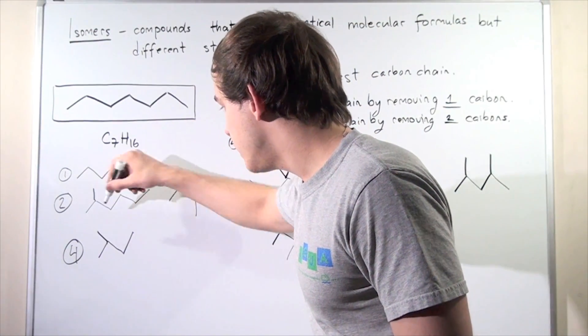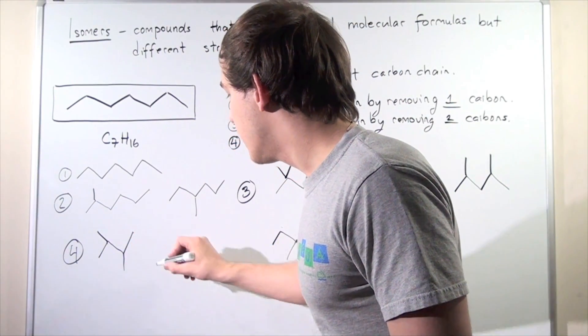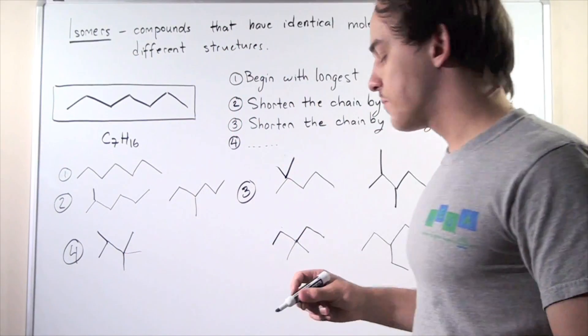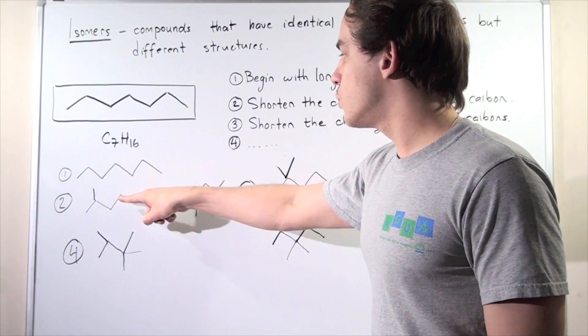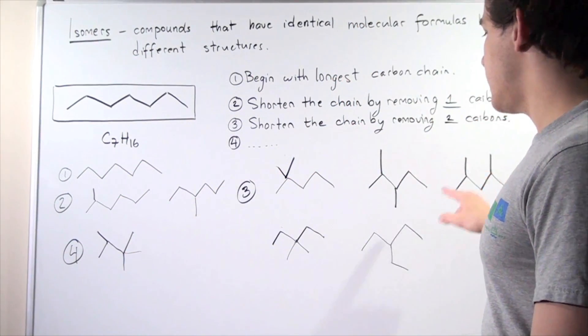So let's place one here, a second one here, and let's place the third one here. And this concludes our isomers. We should have a total of nine. So one, two, three, four, five, six, seven, eight, nine.